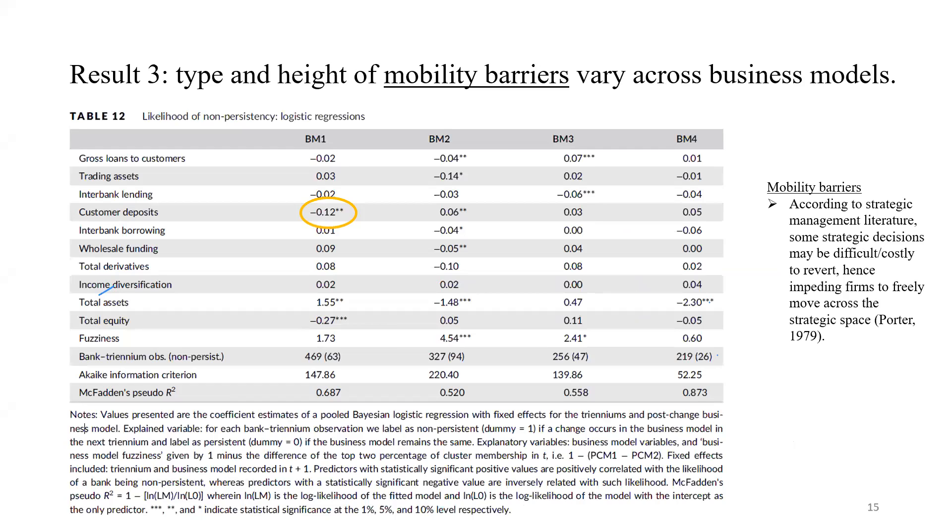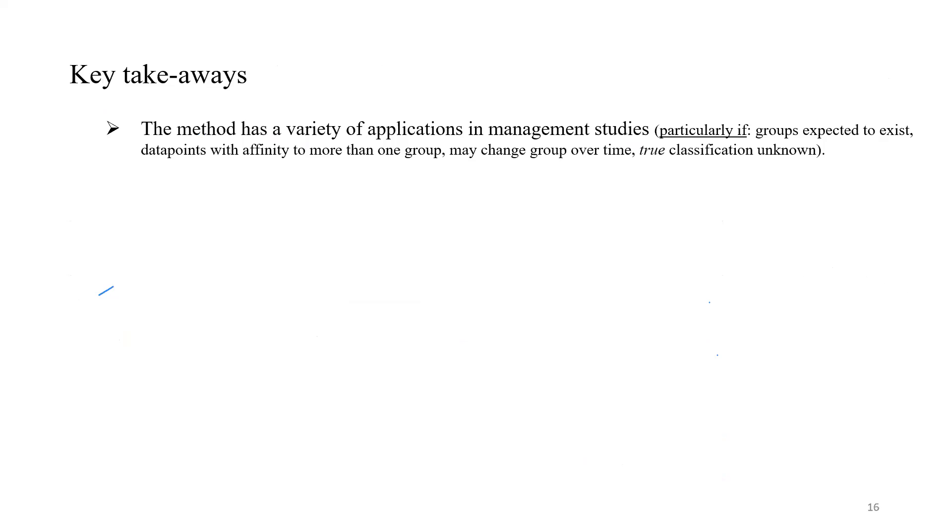Finally, for our empirical setting, it was interesting to note the height of mobility barriers across business models. This is related to which characteristics make banks less able to change from one business model to the other, and that characteristic is different across business models. For retail focused, it is their exposure to customer deposits. For funding diversified, retail diversified funding, it is the size. For the third business model, it is the exposure to interbank lending. The large diversified model is also related to size.